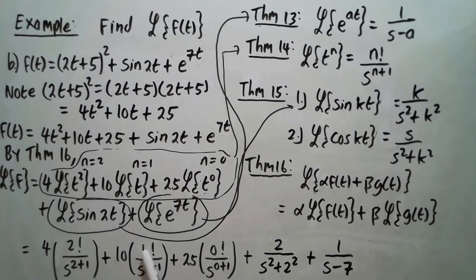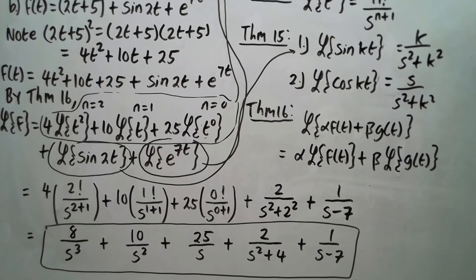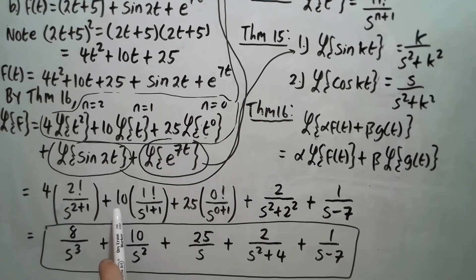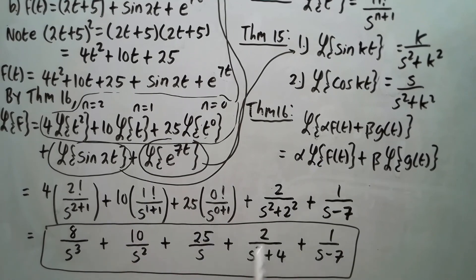Simplifying: 2 factorial is 2, so 4 times 2 is 8, giving 8 over s cubed. Then 10 times 1 gives 10 over s squared. Then 25 times 1 gives 25 over s. Then 2 over s squared plus 4. And finally 1 over s minus 7. So the Laplace transform of f is 8 over s cubed plus 10 over s squared plus 25 over s plus 2 over s squared plus 4 plus 1 over s minus 7.